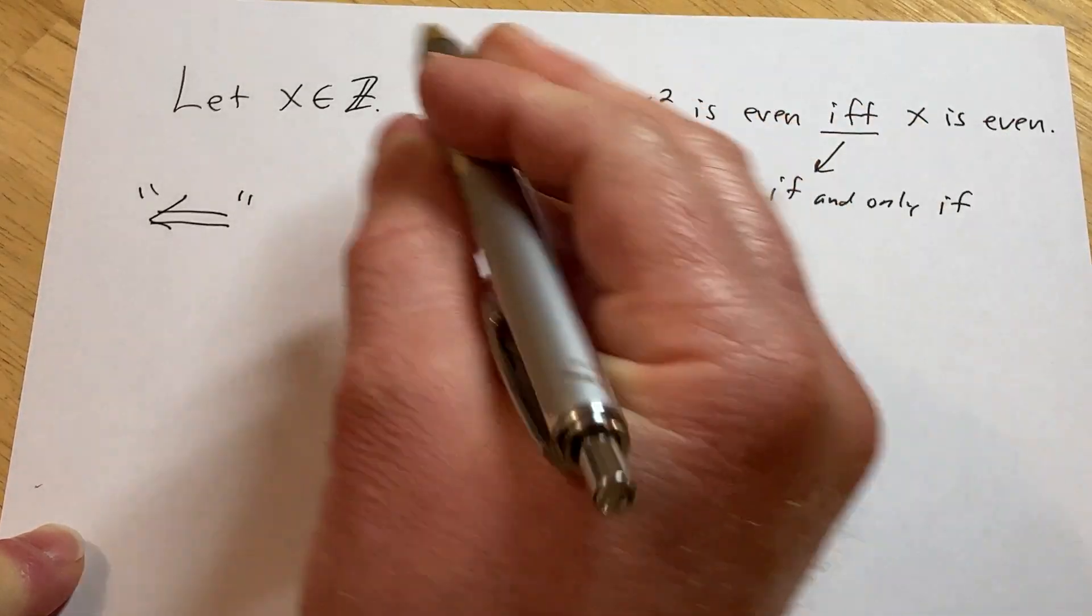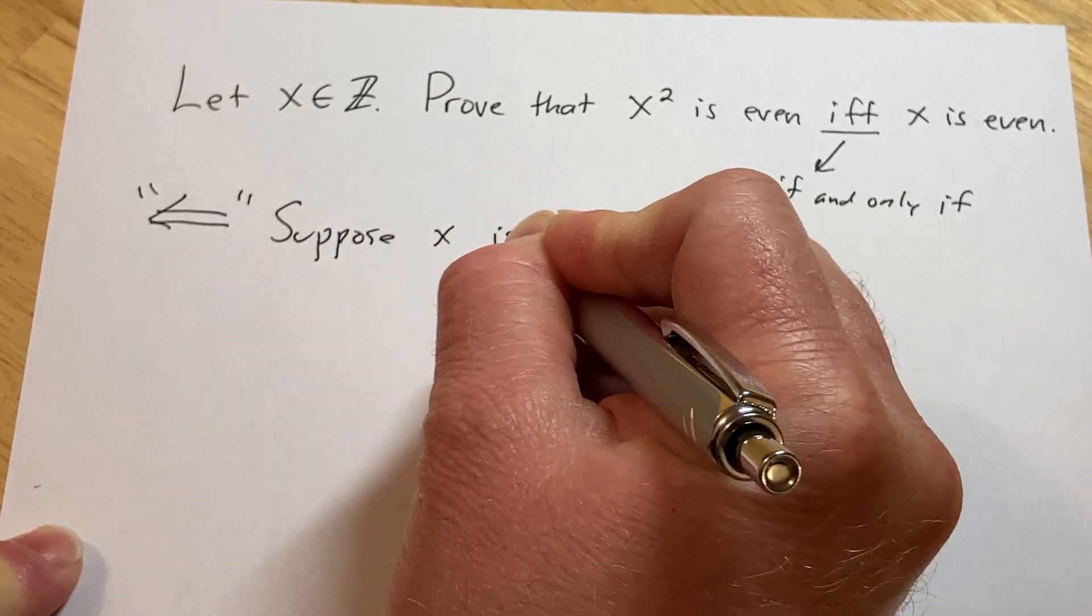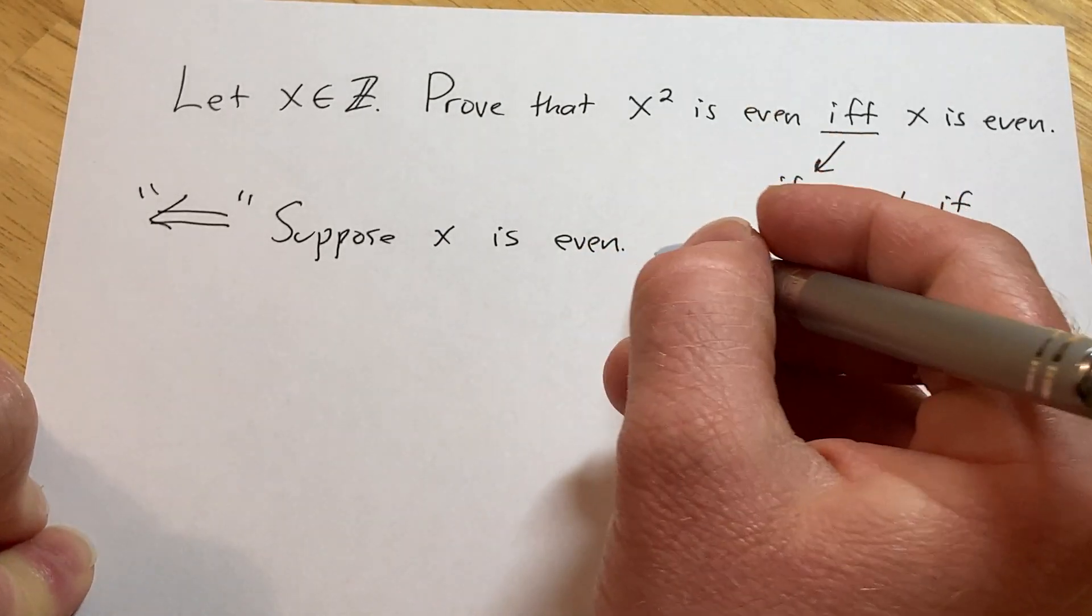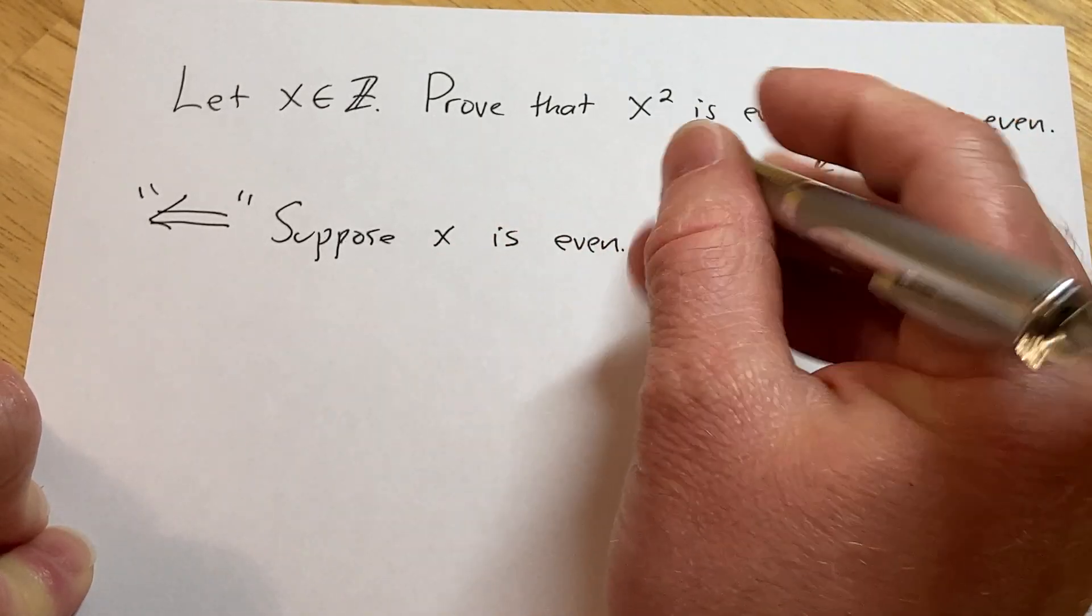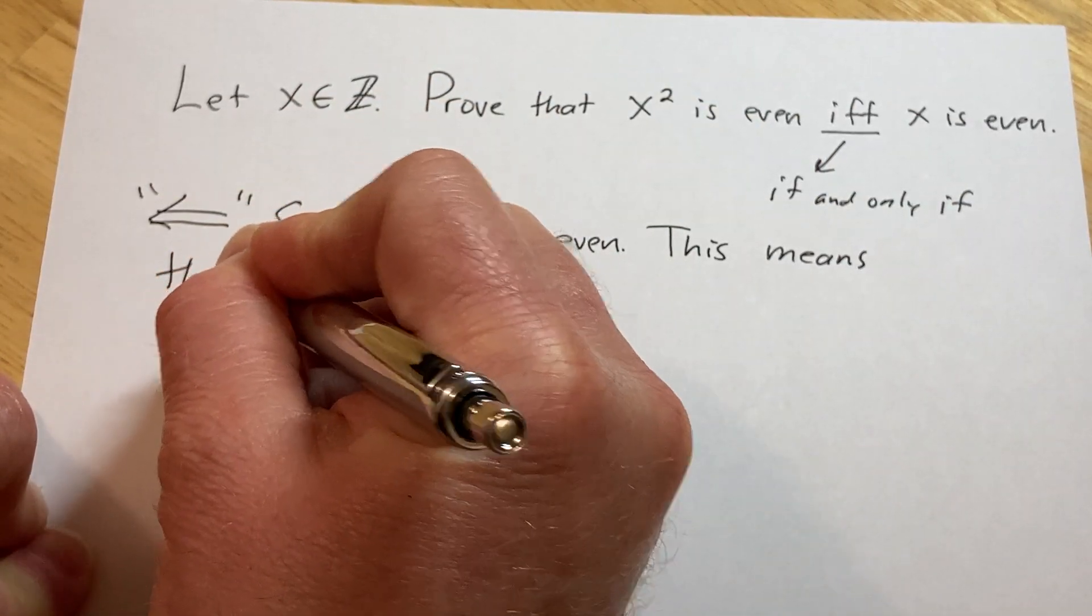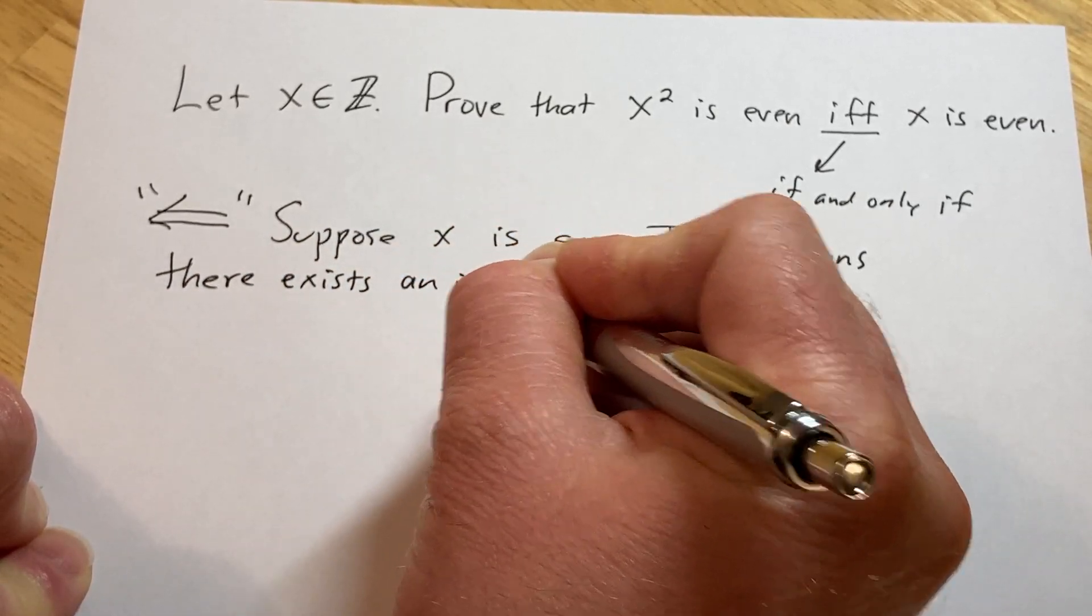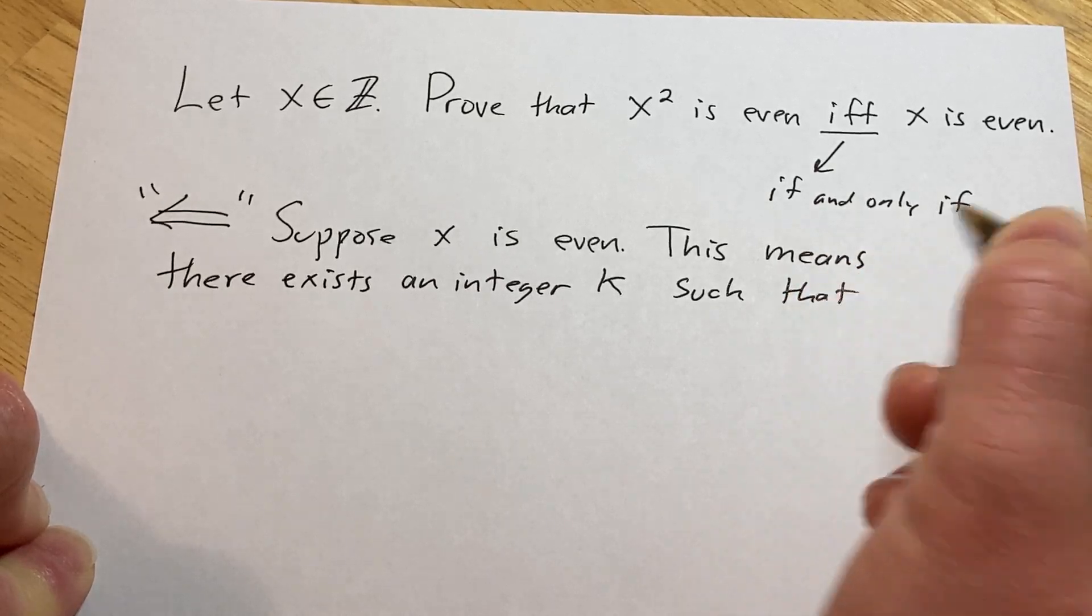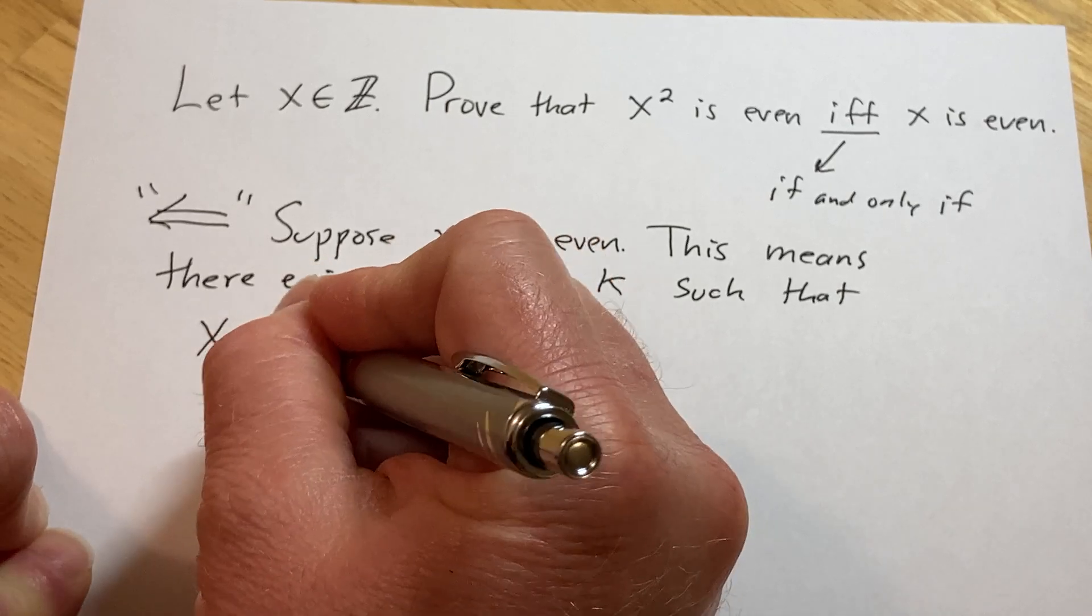So we start by writing down our hypothesis. So you would say, suppose x is even, and the claim is that x squared is even. So the natural thing to do in a proof like this now is write down exactly what it means for x to be even. So this means there exists an integer, let's say k, such that x is a multiple of 2. So x is equal to 2 times k.